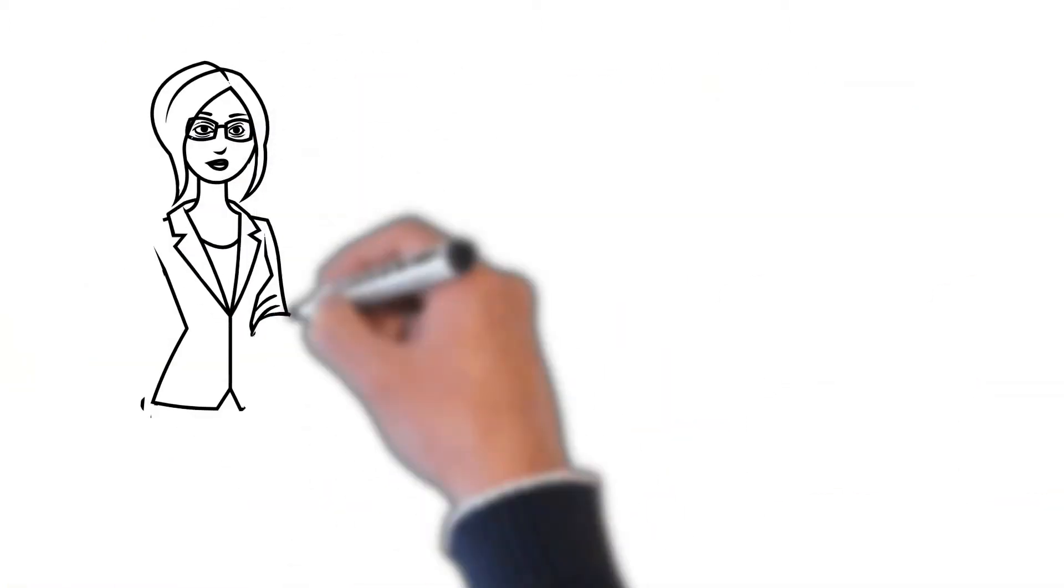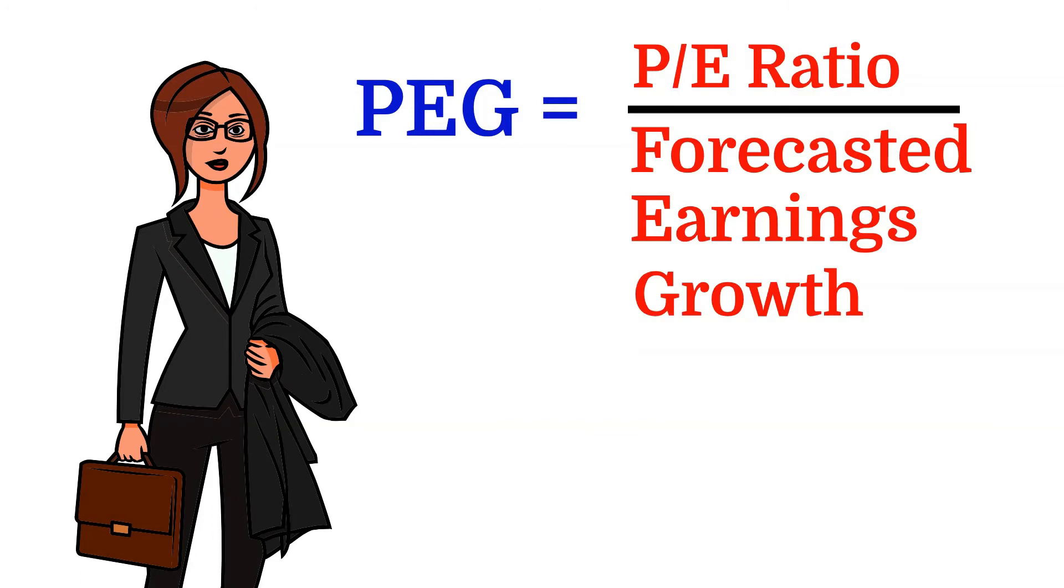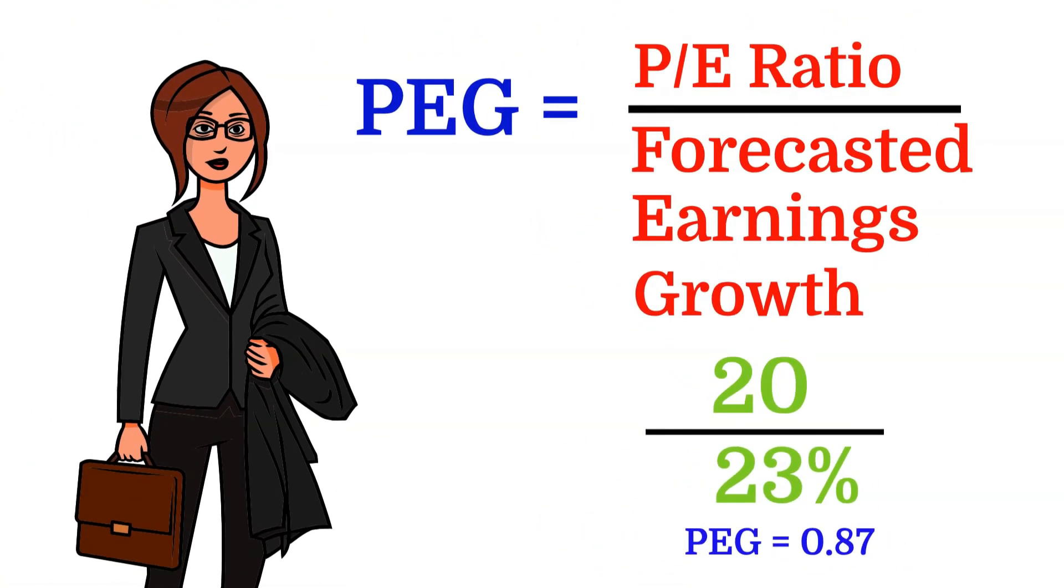The PEG ratio compares a company's PE ratio to its forecasted earnings growth. Typically, the forecasted earnings growth is looking at either the next year or five years out. Low PEG ratios are accomplished when a company has a lower PE ratio with a higher earnings growth projection. This can be a potentially powerful combination.